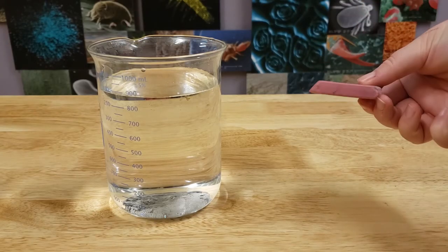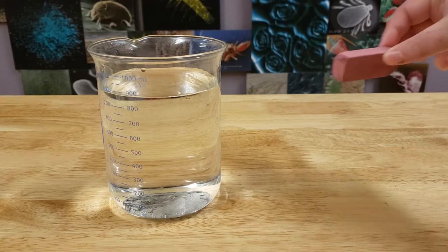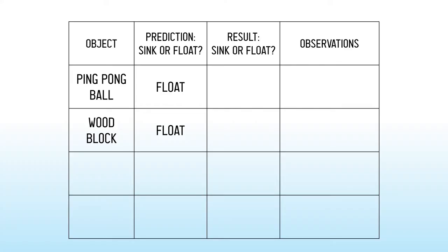Next, I'll test a rubber eraser. They have sort of a flat shape, even though they're kind of heavy, so I think the rubber eraser might float.